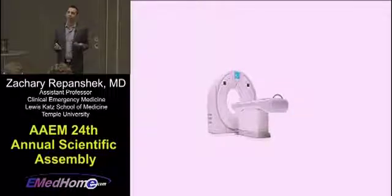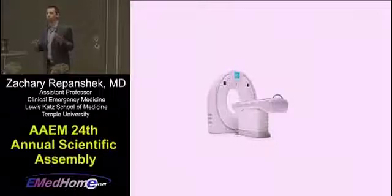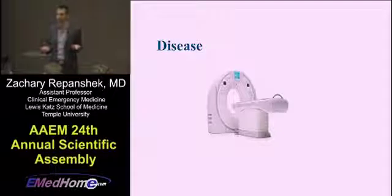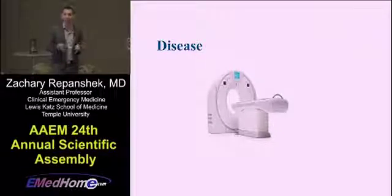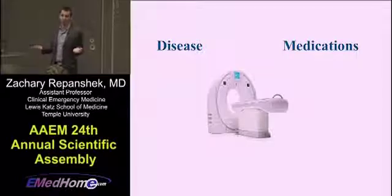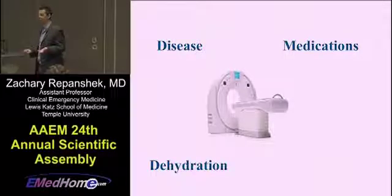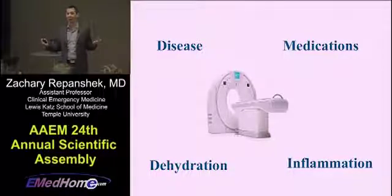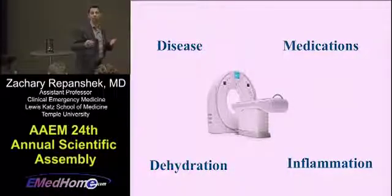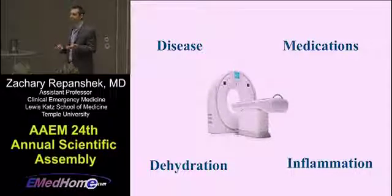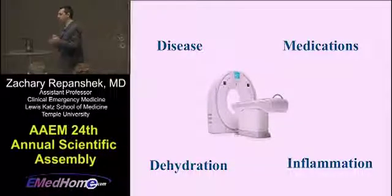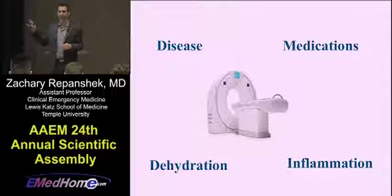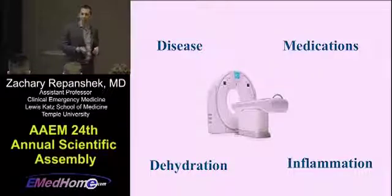Who do we give IV contrast to? We give it to people that we're doing CAT scans on. And who are we doing CAT scans on? We're doing CAT scans on people who are sick — people who have disease processes. People who are sick get medications, can become dehydrated, and get systemic inflammation. There's a lot of things going on in the people we're CAT scanning. So the question is: are we placing the blame on IV contrast, or is the blame laying somewhere on these other things when these people are having renal dysfunction?